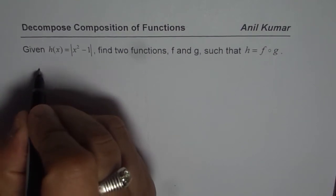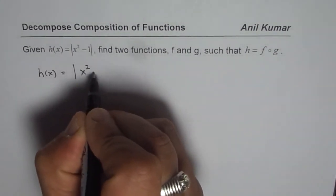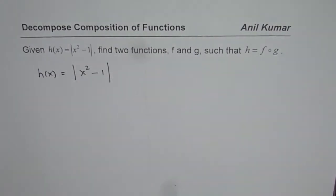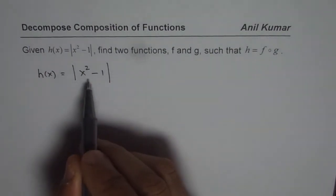So what we are given here is h of x equals to absolute value of x square minus 1. Now we have to write this as composition of two different functions. Now how can we do that? So there are a couple of ways of doing it.